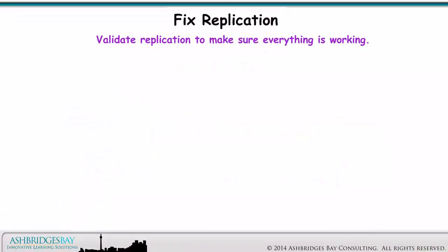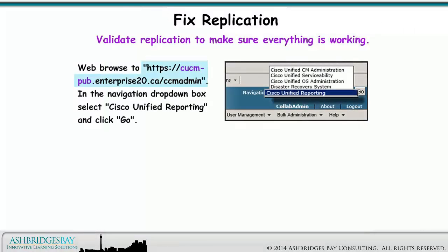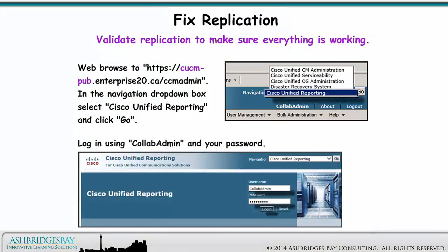Validate replication to make sure everything is working. Web browse to this address. In the Navigation drop-down box, select Cisco Unified Reporting and click Go.